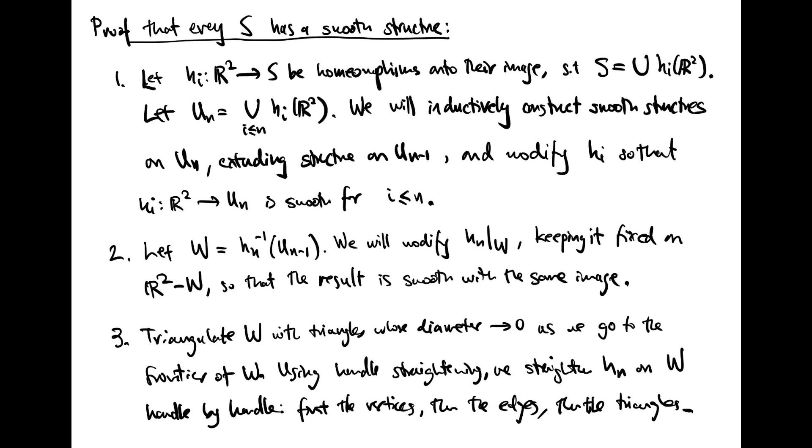This means we can find a countable collection of homeomorphisms, H_i, from the plane into S, such that S is equal to the union of their images. Let's let U_N be the union of the first N of these patches. What we're going to do is inductively construct smooth structures on these U_N, so that when we construct the smooth structure on U_N, it extends the structure on U_(N-1) that we've built so far. And one by one, we're going to modify the maps H_i as we're defining these smooth structures in such a way that the map H_i from R² to U_N is smooth for i ≤ N.